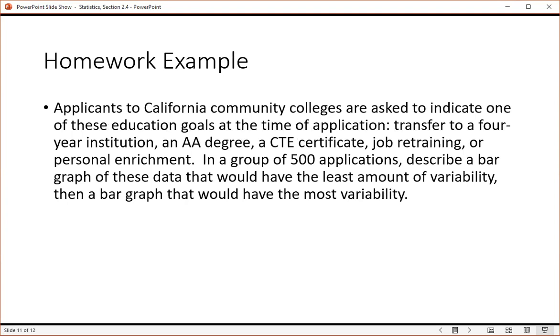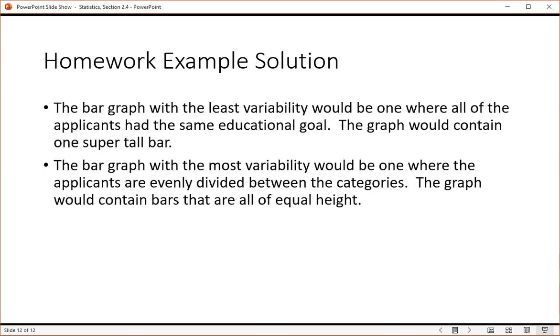And we're talking about variability of the underlying distributions, not the variability of the visual graph. So the bar graph with the least variability in the underlying distribution. So low variability means low diversity would have everyone with the same educational goal. That graph would have one super tall bar. So one super tall bar represents a distribution that has low variability, low diversity.